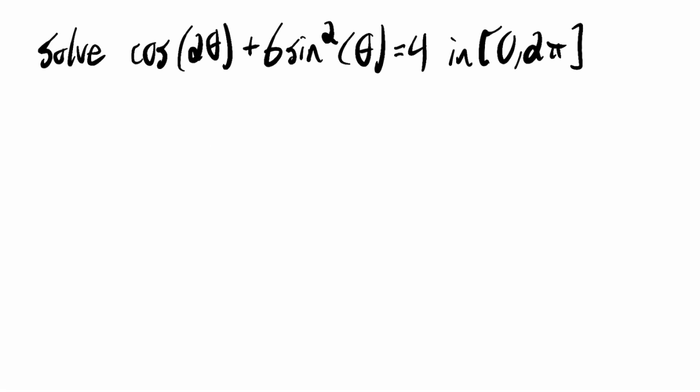So I'll list those identities in one line. Cosine of 2 theta is the same as cosine squared theta minus sine squared theta. And that's also equal to 2 cosine squared theta minus 1, and that's also equal to 1 minus 2 sine squared theta.